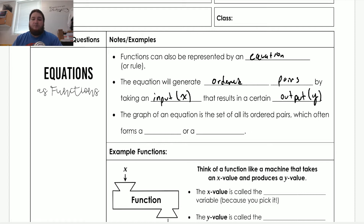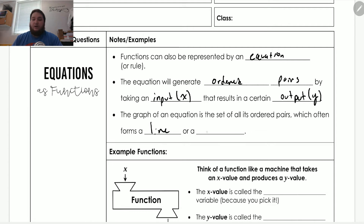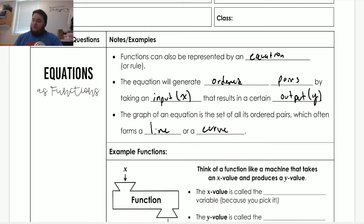For example, if we plug in two, we should be able to get just one value back. The graph of an equation is the set of all ordered pairs, which often forms a line or a curve — and by curve, I mean any other graph that isn't a very straight line.